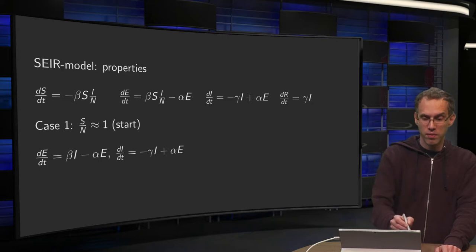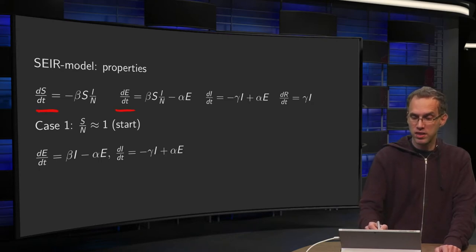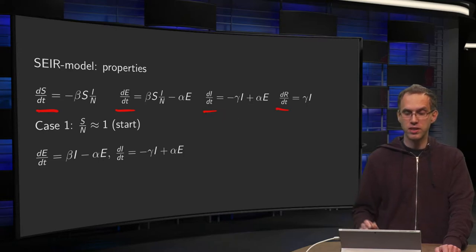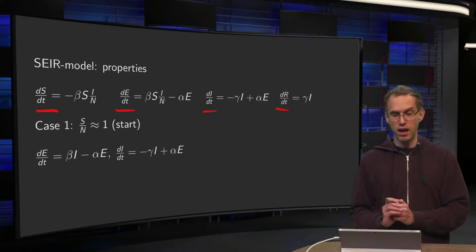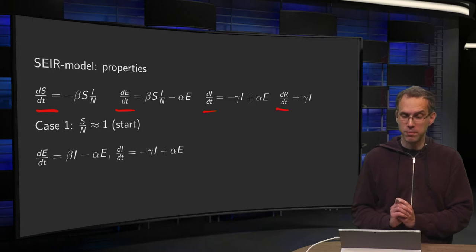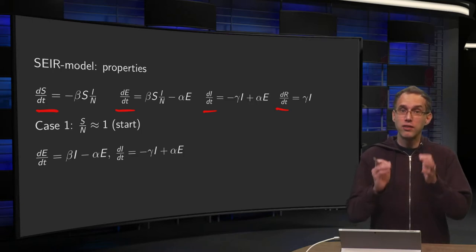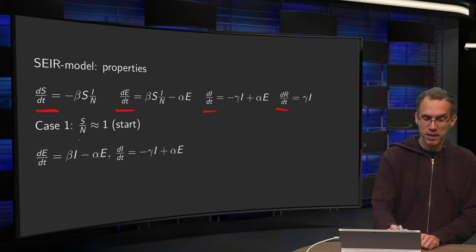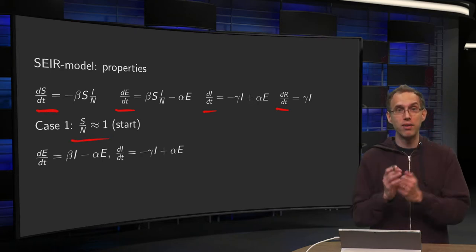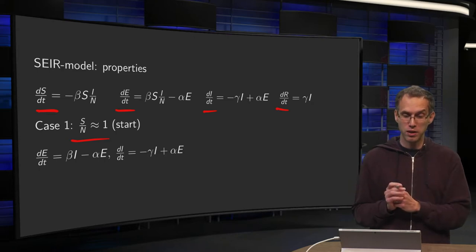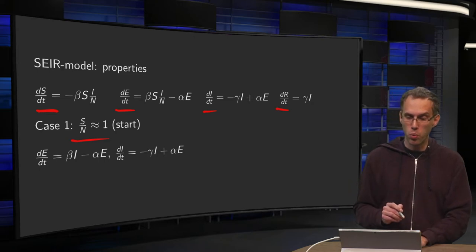So what was our model again with the differential equation for the S DT, the EDT, the IDT and the RDT with parameters alpha and gamma and beta. Now how does the solution look like? Let's first look at the start of an epidemic. In this case you have that almost everyone is susceptible so S over N is approximately equal to 1.